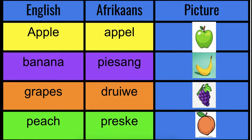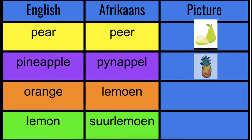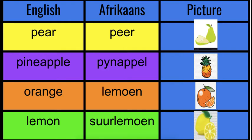Baie mooi grotwees! Now say them on your own. Peer — that's a pear. Pineapple. Suurlemon — that's a lemon. Okay, let's say them together: peer, pineapple, lemon, suurlemon. Fantastic!